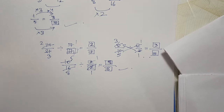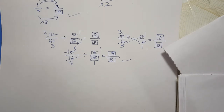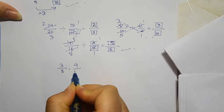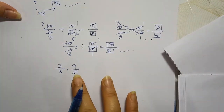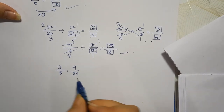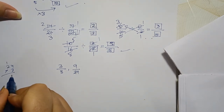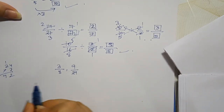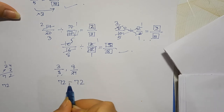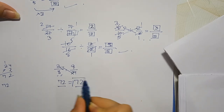Ab check karna hai ki jo pairs of fractions hain, wo equivalent hain ke nahin. 3 upon 8 aur 9 upon 24 diya hua hai — dekhna hai ki yeh equivalent hain ke nahin. Cross multiplication karte hain: 24 into 3 equals 72, aur 8 into 9 equals 72. Jo answers aaye wo same hain.